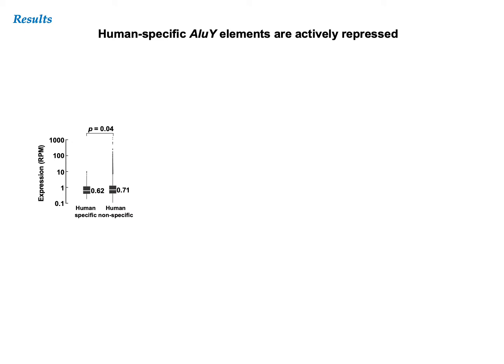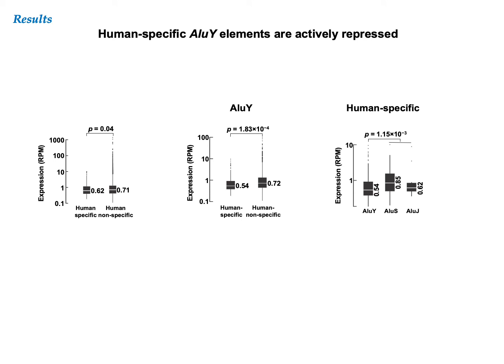The human-specific Alu elements are expressed at significantly lower levels than non-human-specific Alu elements. Our results became more significant when we contrasted human-specific AluYs against non-human-specific AluYs, or against human-specific AluS and AluJ elements. These results indicate that although human-specific Alu elements are mostly from the AluY family, these elements are expressed at low levels. Perhaps it is harmful for these young Alus to be expressed and mobile.